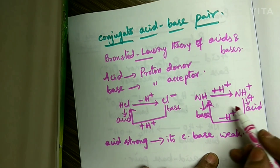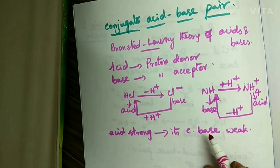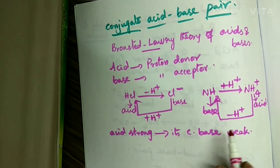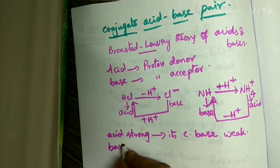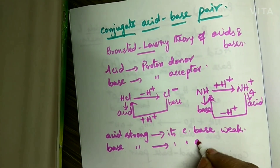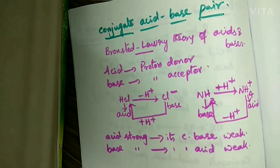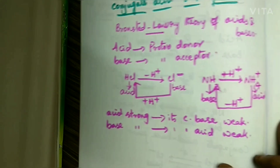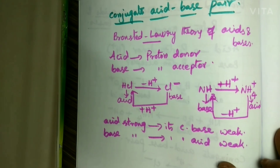A pair of species which differ by a single proton is known as a conjugate acid-base pair. If the base is strong, its conjugate acid is weak. These points we have to remember for answering objective questions. We have to know the strength of acids and bases.